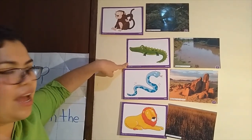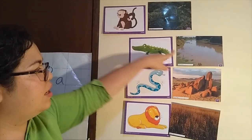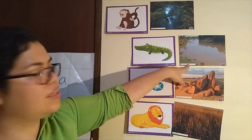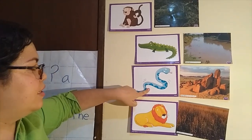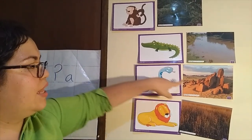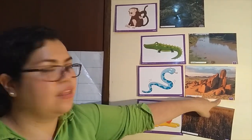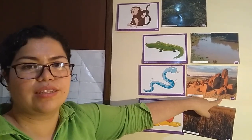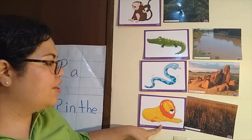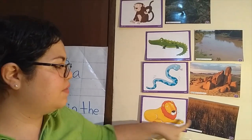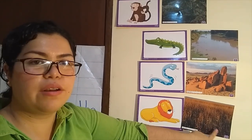The crocodile lives in the river. The snake lives in rocks. A lion lives in the grass.